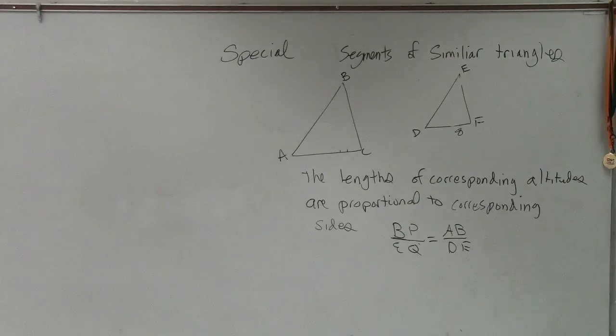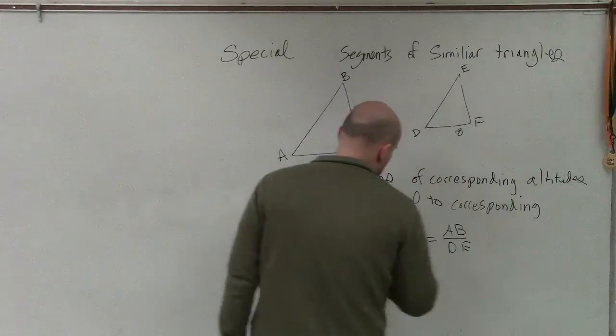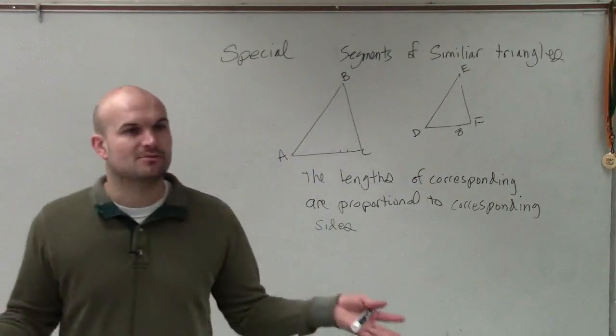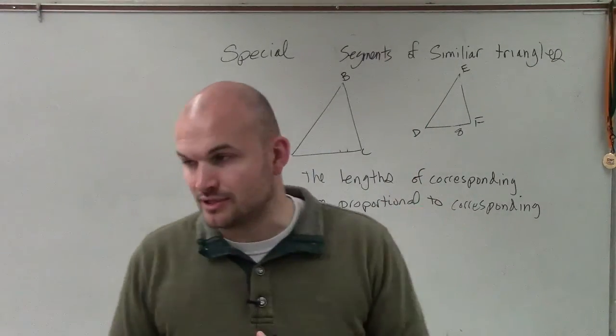So the next one, we don't have altitudes. So we have two similar triangles. We know that the sides are proportional, right?